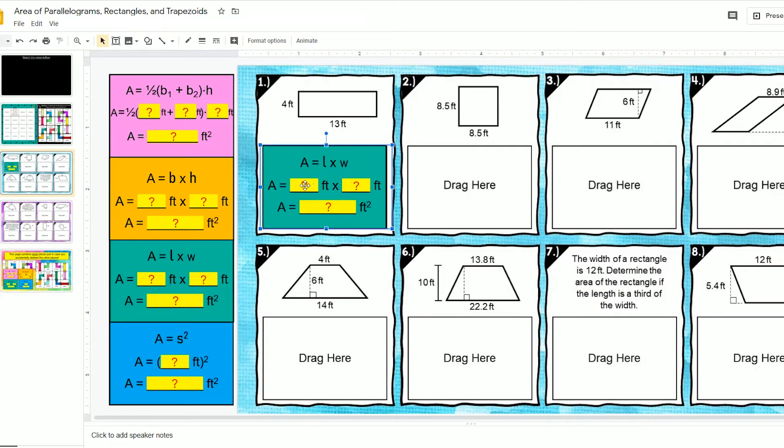Now I'm going to fill in the dimensions. Area equals length - I can click where I have the red question mark. The length is 13 feet, and I just need to type 13 because it already includes feet. The width is 4 feet, so I'm going to type 4 because it already has feet.